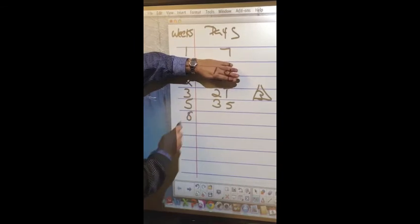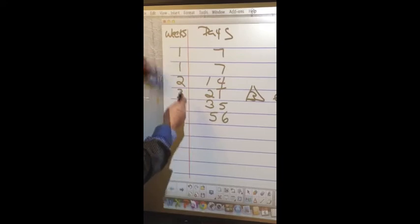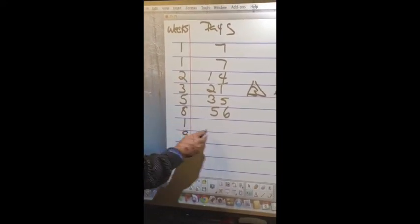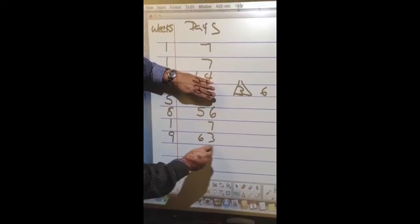Three plus five is eight weeks. Add this, I get 56. Now, I'd really like to know what nine weeks would be, so I'll just add one more week. That's seven days. 63.